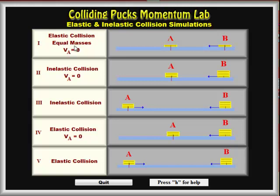The lab looks at five possible collisions. The first one is an elastic collision where the pucks bounce off of each other and they each have the same mass. The second simulation looks at an inelastic collision where they stick together, but the velocity of the first puck is zero. The third one looks at an inelastic collision where the pucks stick together, but now both pucks are moving at the beginning. The fourth one is an elastic collision where the masses can be changed and the initial object starts at zero velocity.